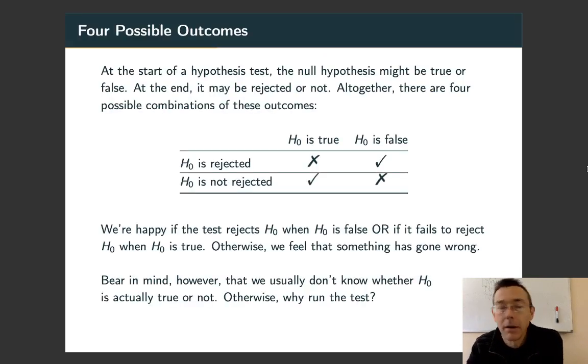So when we run a hypothesis test, there's two possible things that can happen to H0. It can be true or false. And at the end of the test, there's two possible decisions we could make. Either reject H0 or don't reject it. So four possible outcomes total when we look at the combinations of those two.